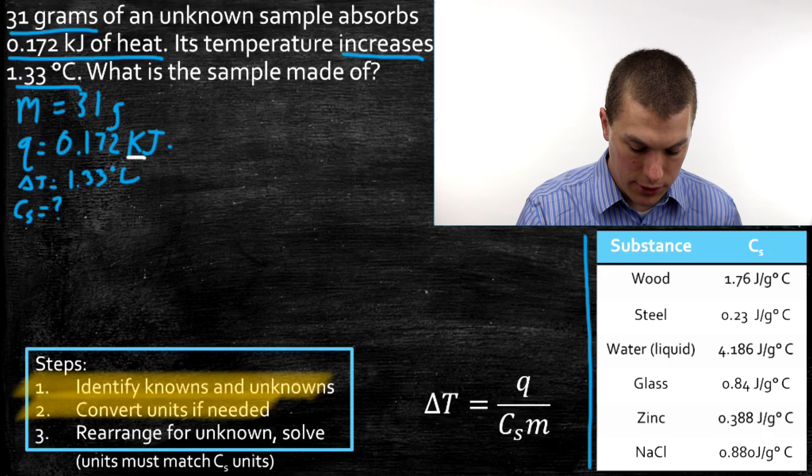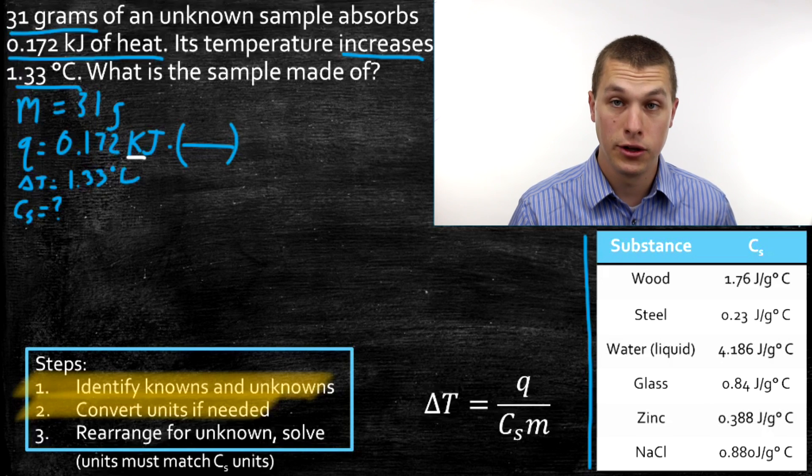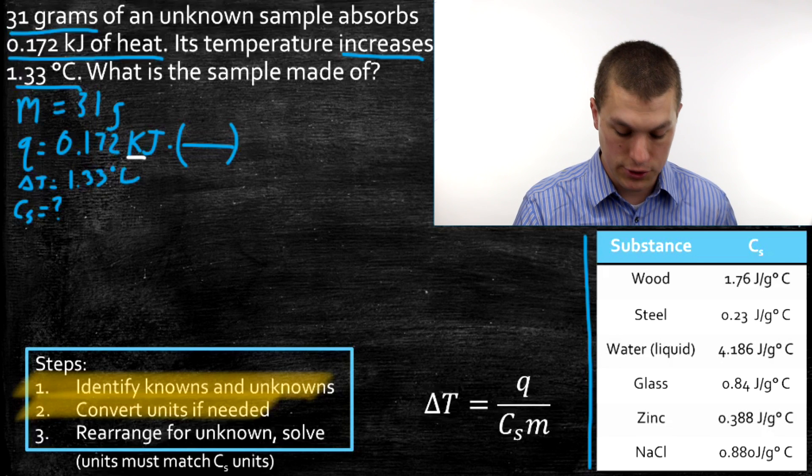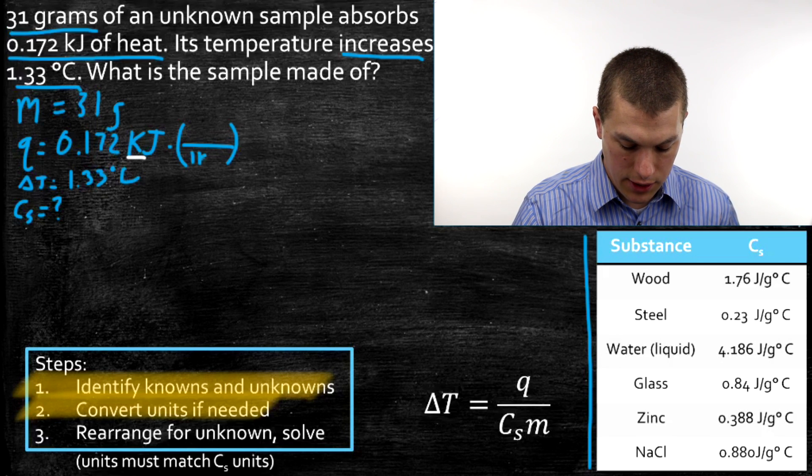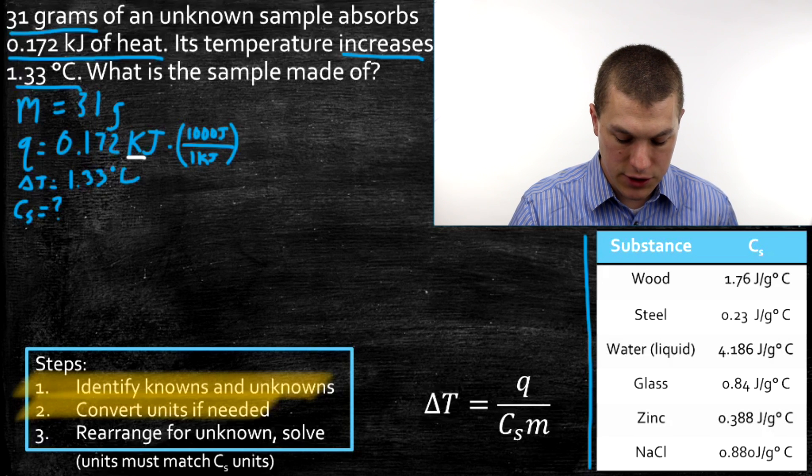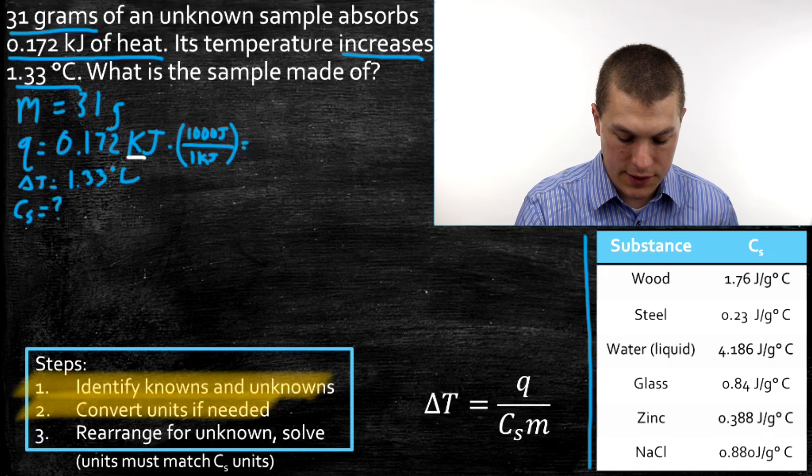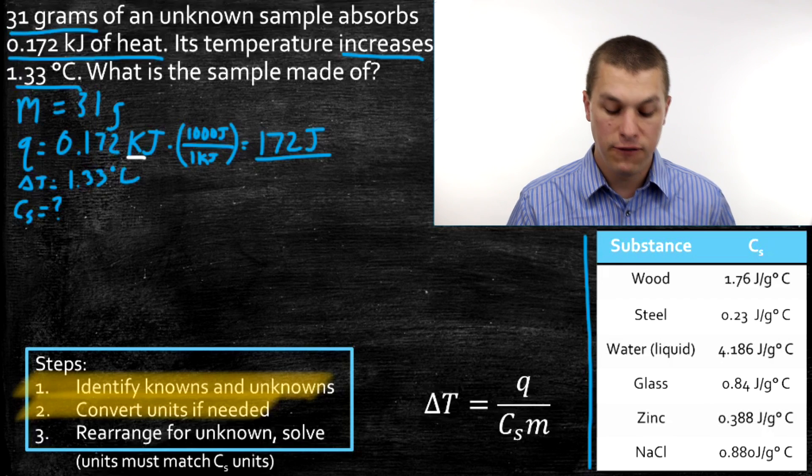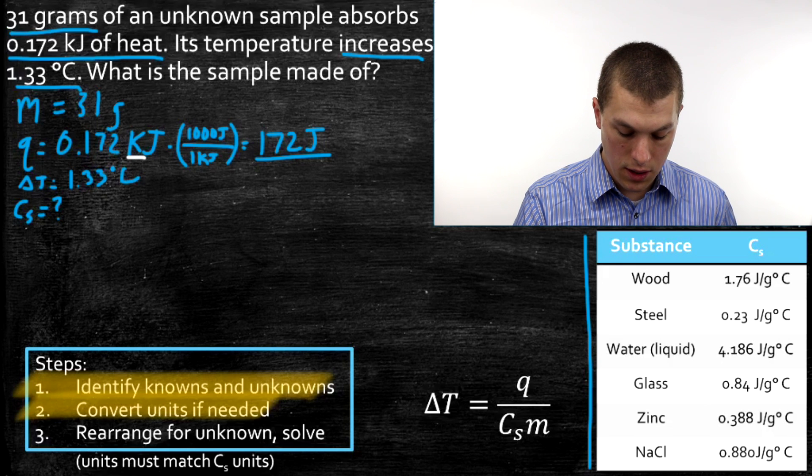Now it turns out kilojoules, the conversion just looks like the conversion from kilograms to grams. There's a thousand joules in a kilojoule. So we have one kilojoule down here and a thousand joules up here, and that's just going to move our decimal over three places, and we're going to get 172 joules. But we have to do that conversion before we plug it into our equation.